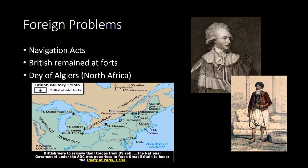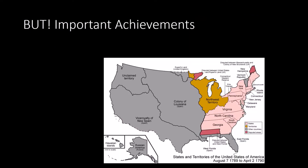Then there was the Dey of Algiers, the chief of a North African kingdom controlling the Mediterranean, who was taking American sailors — many New England shippers — hostage, kidnapping them and making them slaves. There wasn't anything we could do about it. We couldn't act in any united way; we couldn't raise an army, we couldn't tax to pay for an army. So these were unresolved issues.